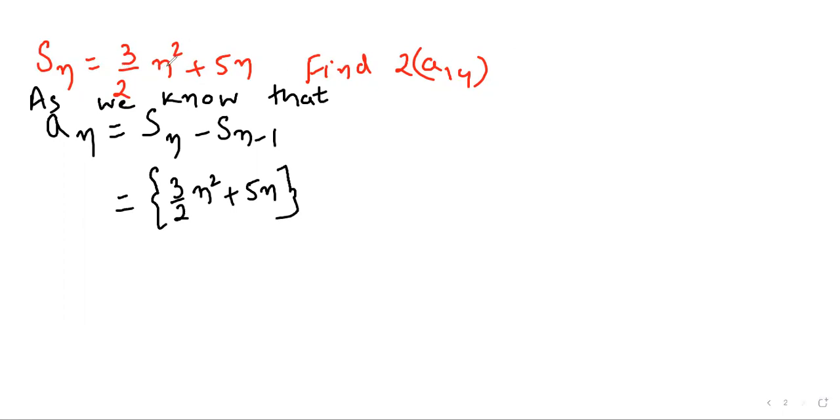Meaning at the place of n squared we have to apply n minus 1, at the place of 5n we have to apply n minus 1. That is called Sₙ₋₁, n minus 1 replacement in this formula aₙ = Sₙ - Sₙ₋₁.